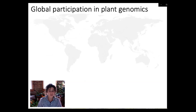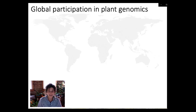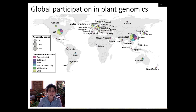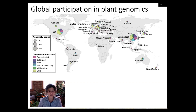Moving on, the next question we were interested in was who is doing the genome sequencing. We looked at the institution of the corresponding author that submitted the genome assembly and assigned the genome to that location. What we found was pretty stark — plant genome sequencing has really been dominated by the United States, central Europe, and China, with over three quarters of genome assemblies having been led by a team in one of these three areas.